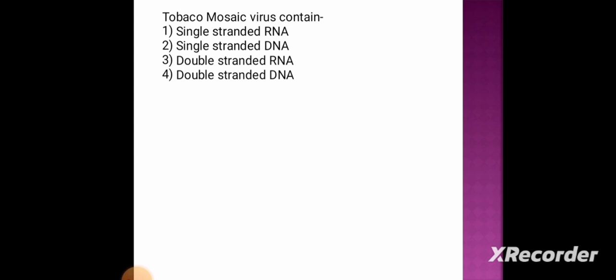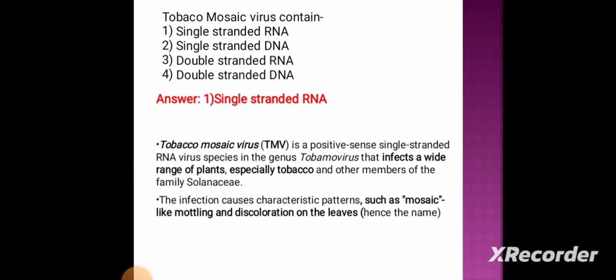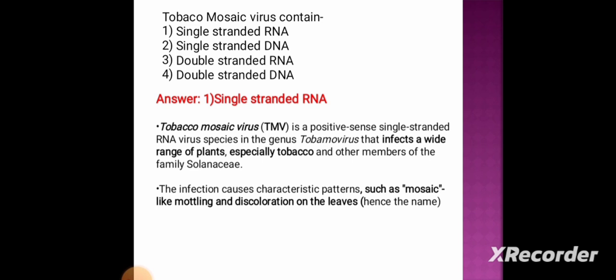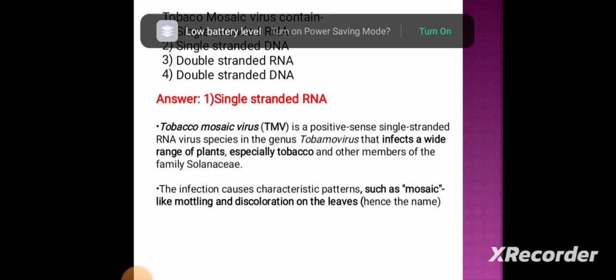Tobacco mosaic virus contains — option 1: single-stranded RNA, option 2: single-stranded DNA, option 3: double-stranded RNA, option 4: double-stranded DNA. The correct answer is option 1, single-stranded RNA. Tobacco mosaic virus is a positive-sense single-stranded RNA virus in the genus Tobamovirus that infects a wide range of plants.